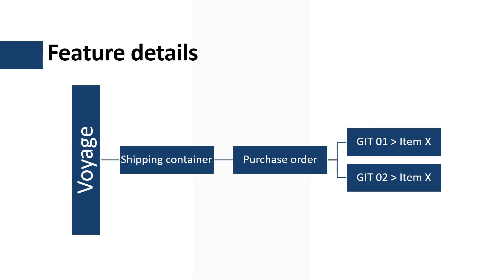Before this feature, if an item is in the same voyage shipping container and the same purchase order, multiple goods in transit orders will be created. However, while receiving the item, the warehouse management mobile application by default will show only the first goods in transit order for receiving. In this case, the user cannot select a specific goods in transit order, which becomes a challenge especially for order lines where tracking dimensions like batches or serial numbers are specified on the purchase order line level. Right now, when this feature is enabled, the user can pick a specific goods in transit order for receiving.